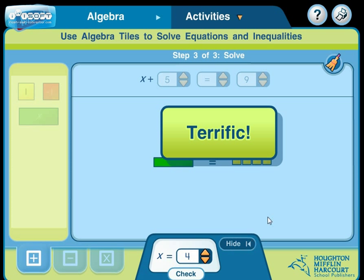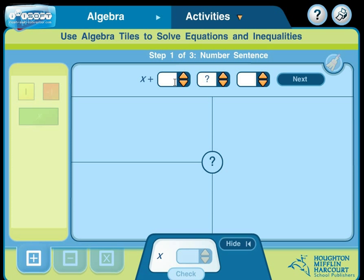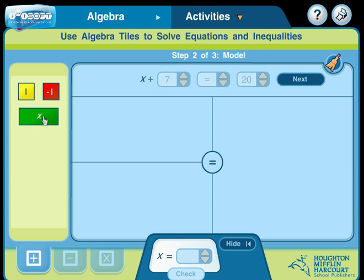Alright, let's just take a look at another example. Let's do x plus, how about 7, and we'll still make it equals. And this time let's go up to 20. Alright, so that means we need one x to put in here. And we're going to need 7 of these guys to put in here.